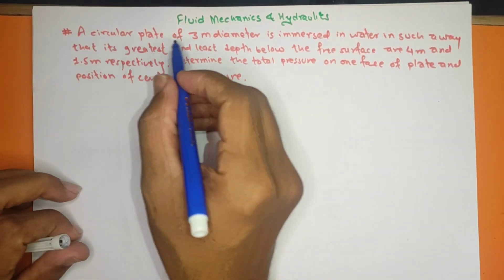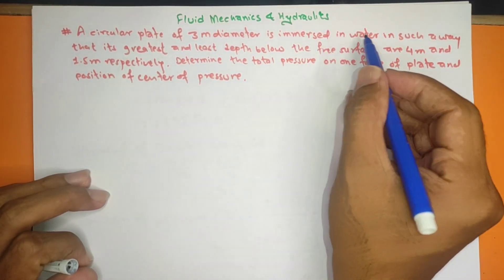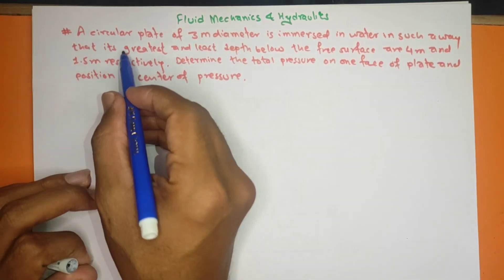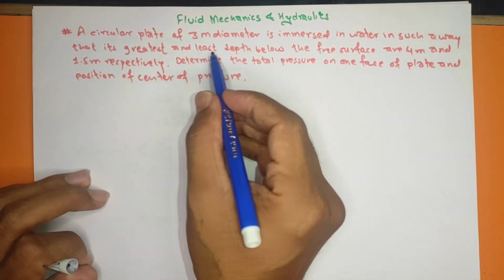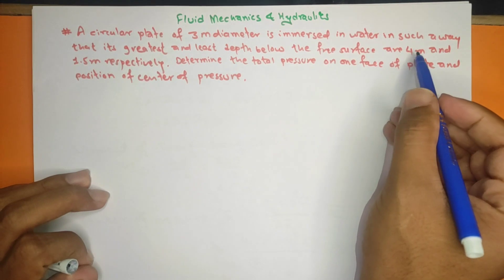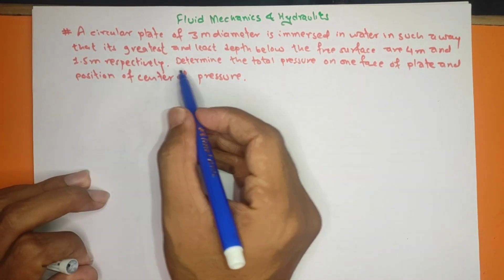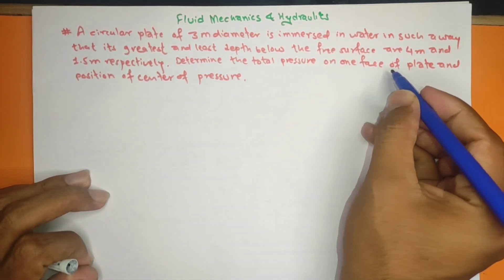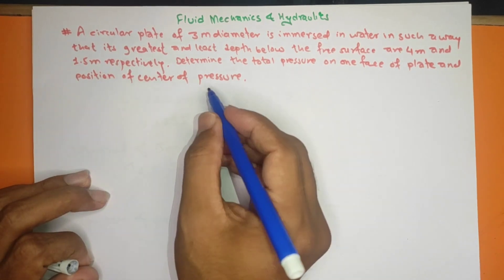A circular plate of 3 meter diameter is immersed in water such that its greatest depth and least depth below the free surface are 4 meter and 1.5 meter respectively. Determine the total pressure on one face of the plate and the position of the center of pressure.